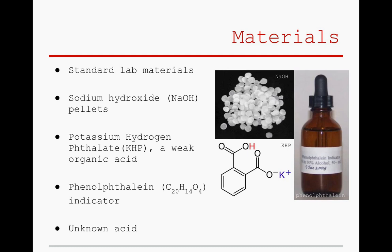Several things were provided from the beginning. Among these were standard lab materials — see appendix B for more information — solid sodium hydroxide pellets, KHP, phenolphthalein, and of course, the acid to be identified.